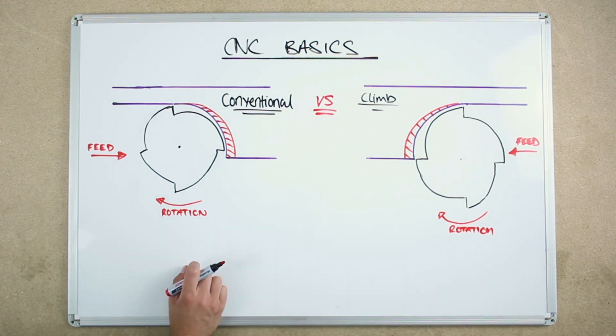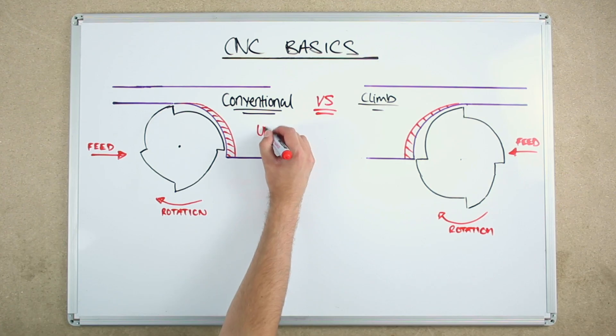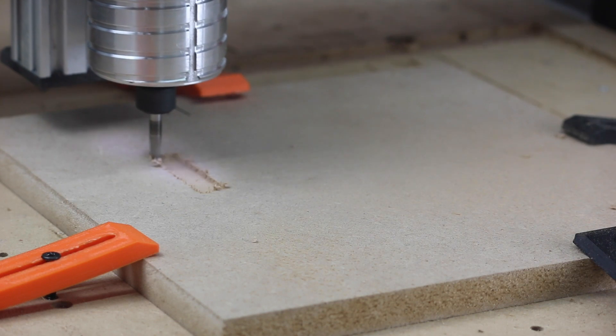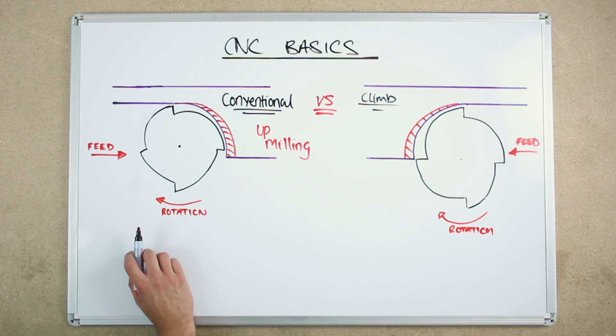In a situation with the end mill rotating clockwise, conventional milling, also sometimes referred to as up milling, is when you are milling against the rotation of the end mill. Cutting a chip is resisting the end mill in the opposite direction to the feed.